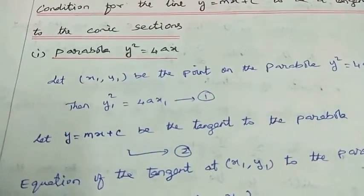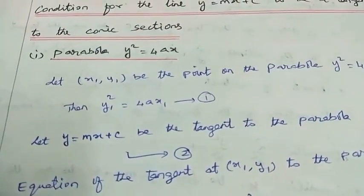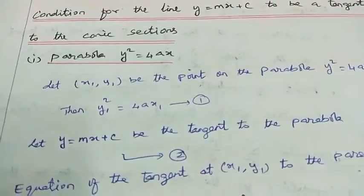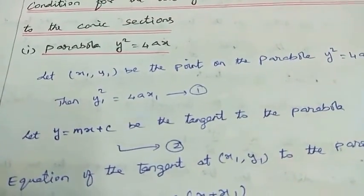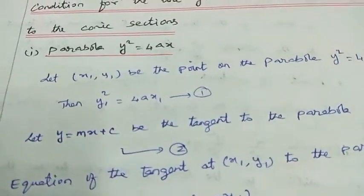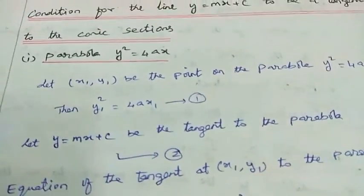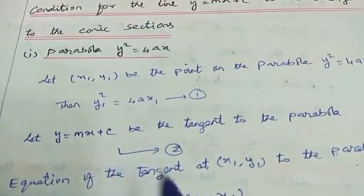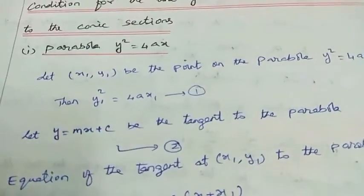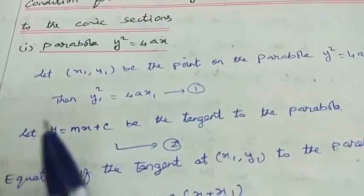For the parabola y square equal to 4ax, the condition for the line, ellipse, and hyperbola will be covered. First one: y square equal to 4ax.